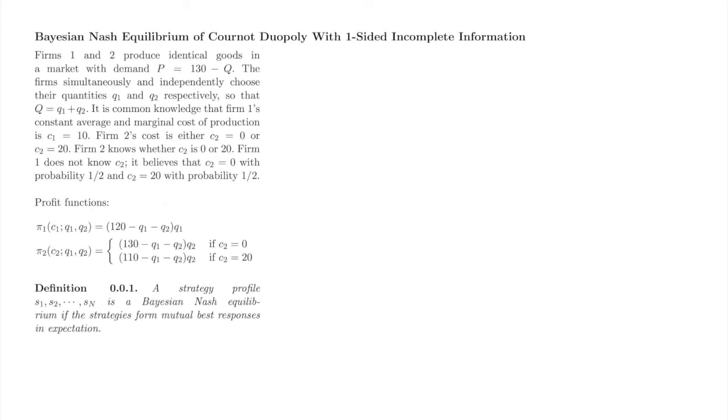We'll find the Bayesian Nash equilibrium of the Cournot duopoly with one-sided incomplete information that we introduced in the previous video. Here is the normal form of the game, the firm's respective profit functions, and the definition of Bayesian Nash equilibrium.